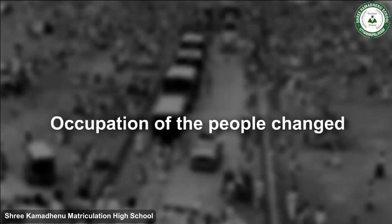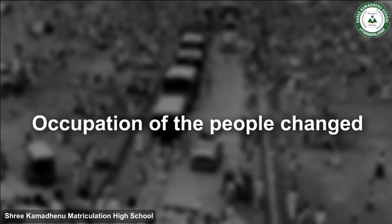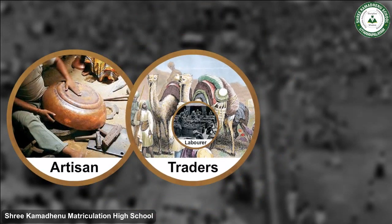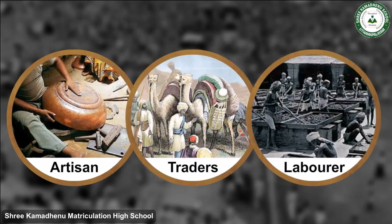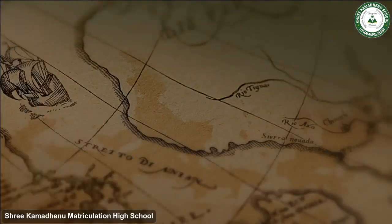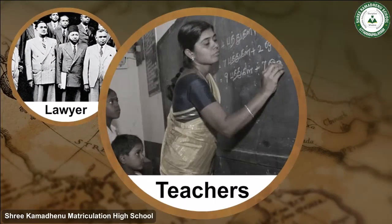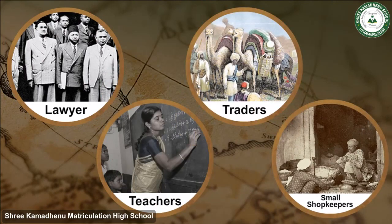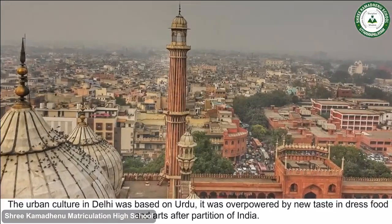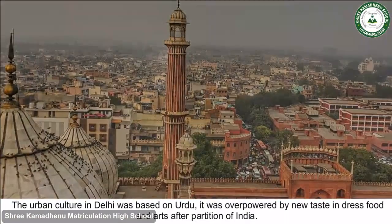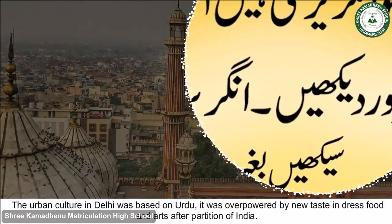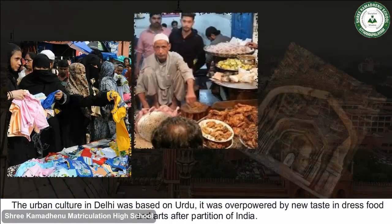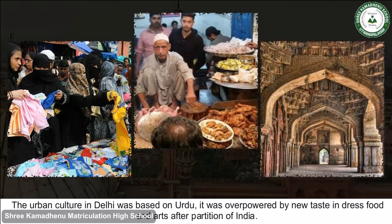The occupation of people changed dramatically. Earlier, people were artisans, traders and laborers. But the new migrants were lawyers, teachers, traders and small shopkeepers. The urban culture in Delhi, which was based on Urdu, was overpowered by new tastes in dress, food and arts after the partition of India.